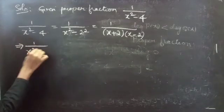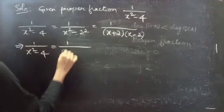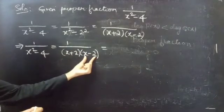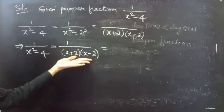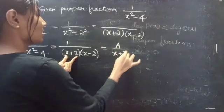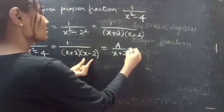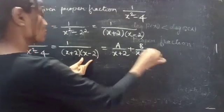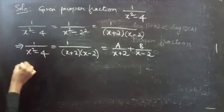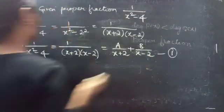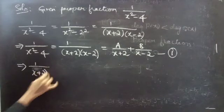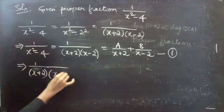Now we can write it as A by x plus 2 plus B by x minus 2. We have written two partial fractions. Let us consider this as equation number 1. So we have 1 by x plus 2 into x minus 2 equals to A by x plus 2 plus B by x minus 2.